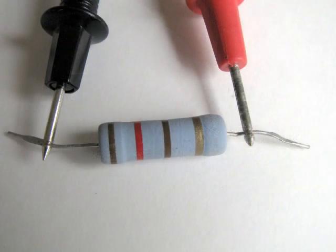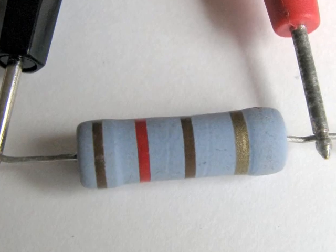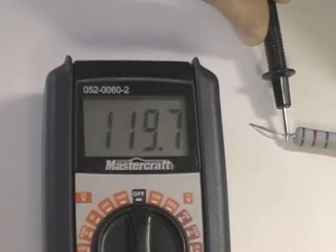According to these color bands, brown, red, brown, this is a 120 ohm resistor. The meter shows a value of 119.7. This value is within the 5% tolerance range for this resistor.